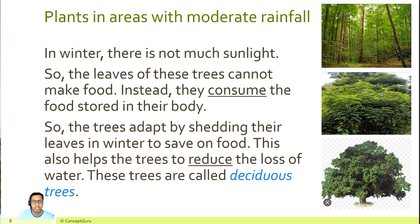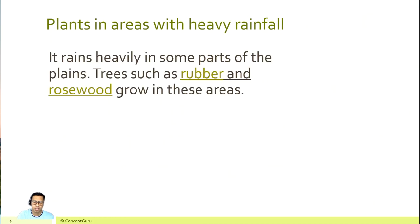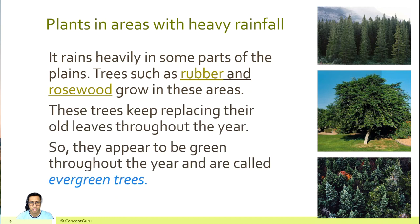Now let's take a look at plants in areas with heavy rainfall. It rains heavily in some parts of the plains. Trees such as rubber and rosewood grow in these areas. These trees keep replacing their old leaves throughout the year, so they appear to be green throughout the year and are called evergreen trees.